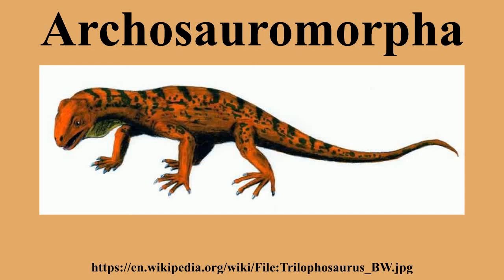Of the taxa mentioned above, Rhynchosaurs, Trilophosaurs, and Prolacertiformes died out before the end-Triassic extinction. The Choristoderans continued as a minor group until the Miocene, and the Archosauriformes were important factors in early Triassic environments before giving rise to the even more successful Archosauria.